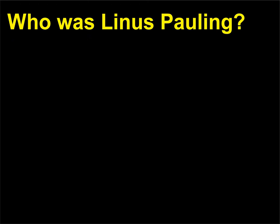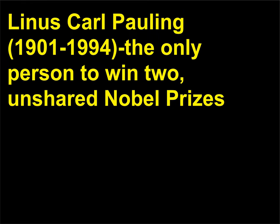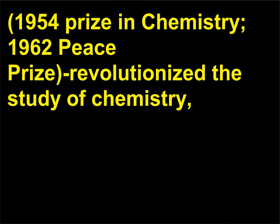Who was Linus Pauling? Linus Carl Pauling, 1901–1994, was the only person to win two unshared Nobel Prizes — the 1954 Prize in Chemistry and the 1962 Peace Prize. He revolutionized the study of chemistry.